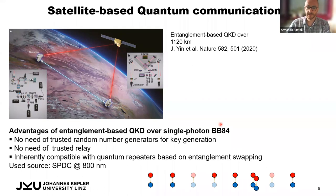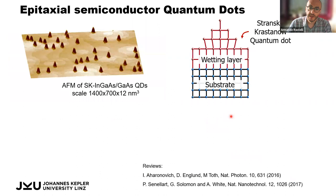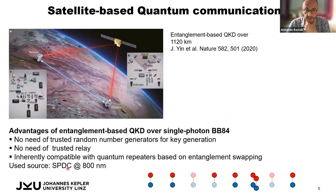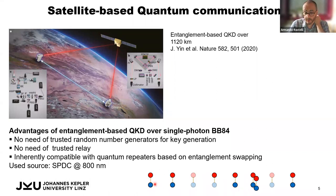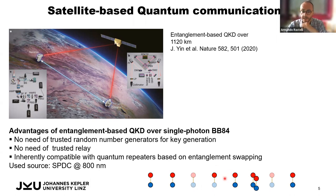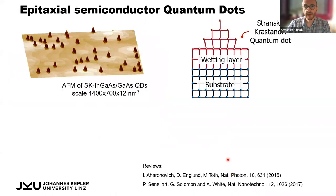Entanglement is very interesting for fundamental science. One of the limitations of spontaneous parametric down-conversion sources is that if you increase the brightness — to increase the probability of having a pair of entangled photons — you simultaneously increase the probability of multi-pair generation. Without number-resolving detectors, this can produce errors. So you have to find a compromise to maximize pair generation probability while minimizing multi-pair generation. This is where quantum dots or semiconductor nanostructures enter the game.